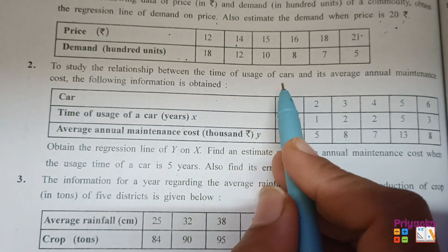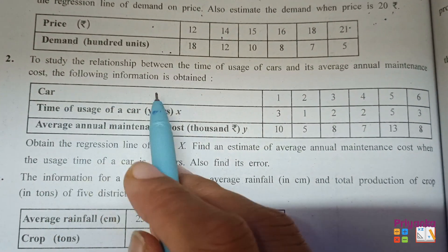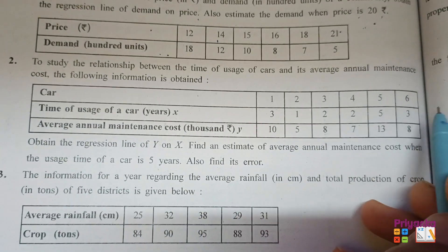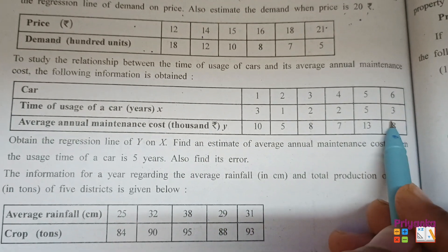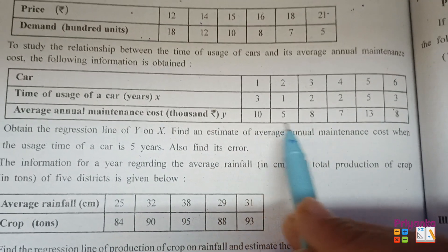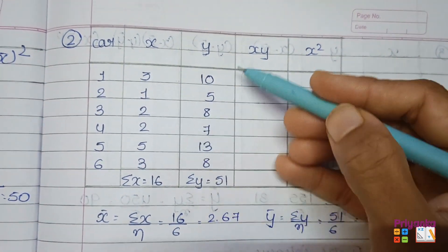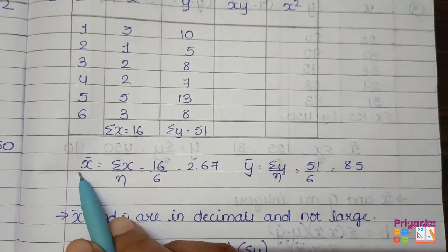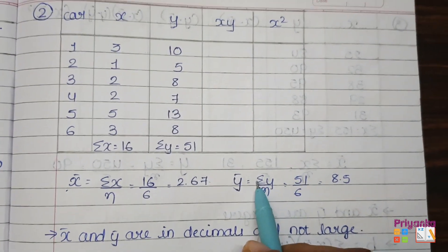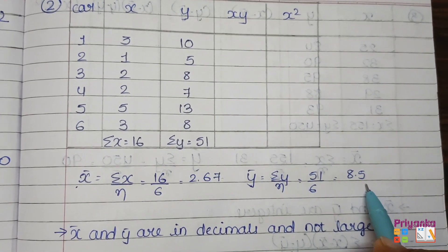To study the relation between the time of usage of a car and its average annual maintenance cost, the following information is obtained. The number of cars are given; the time of usage of car is denoted as x and the average annual maintenance cost as y. I made the total of the x column and the y column and found x̄ = 2.67 and ȳ = 8.5.